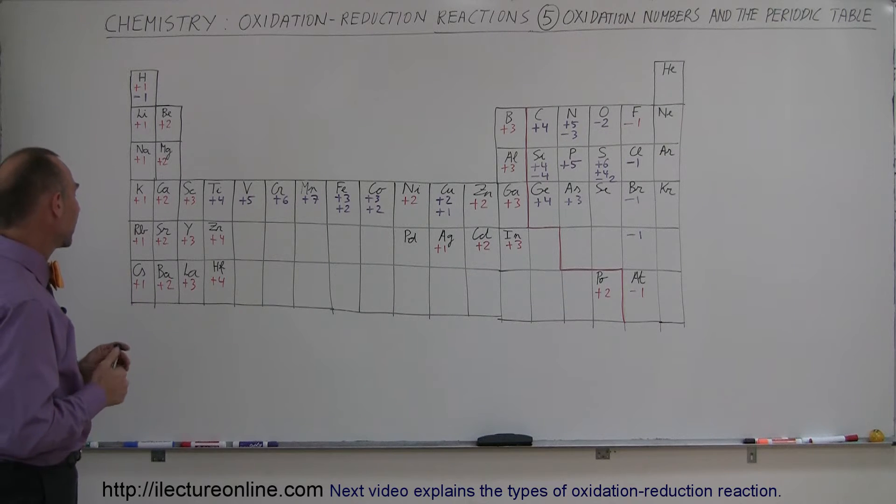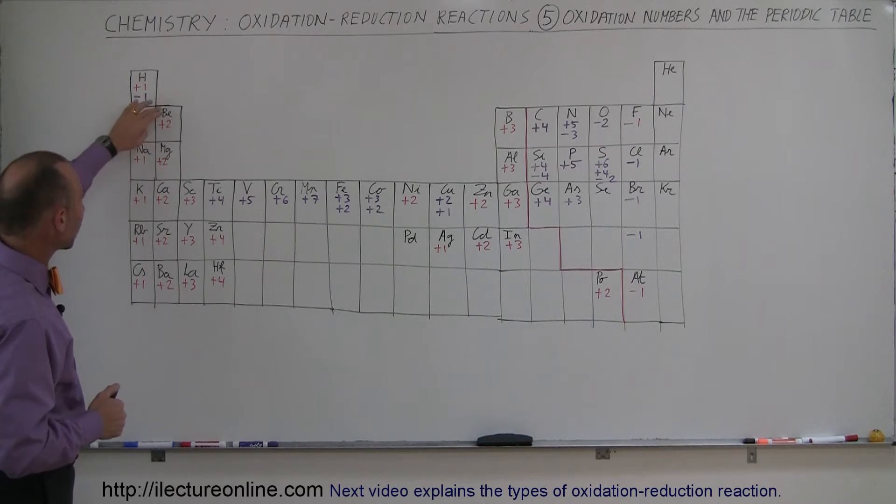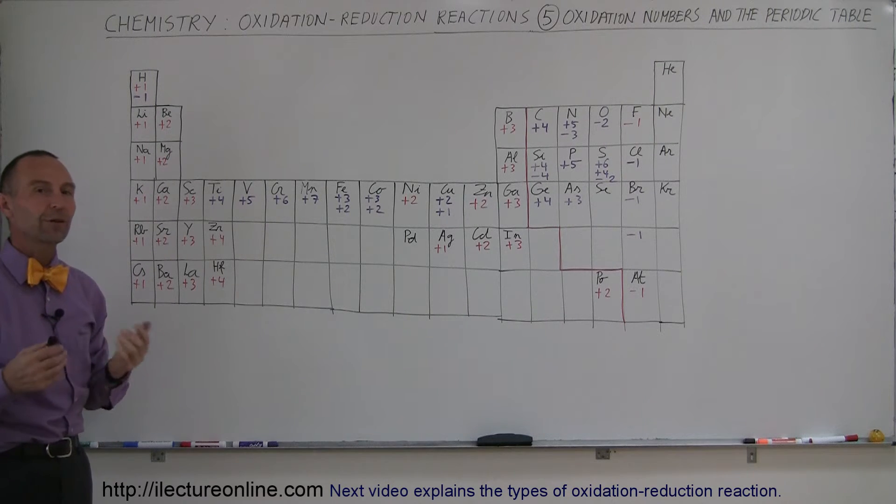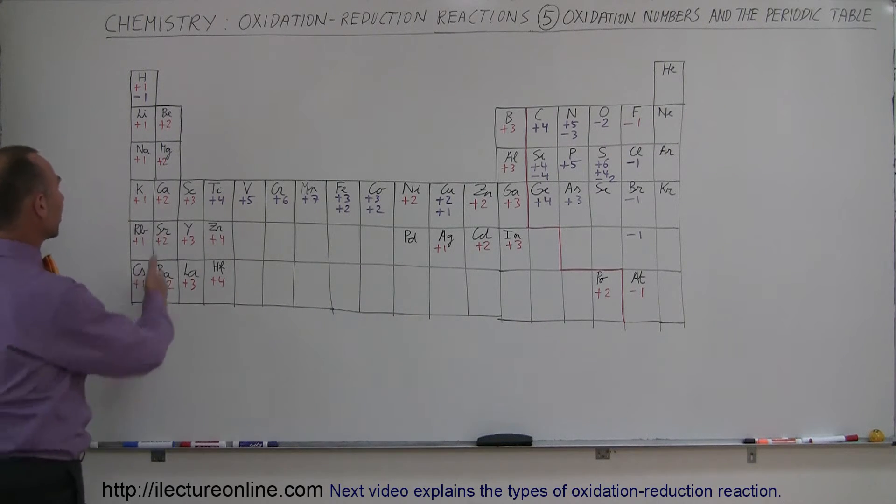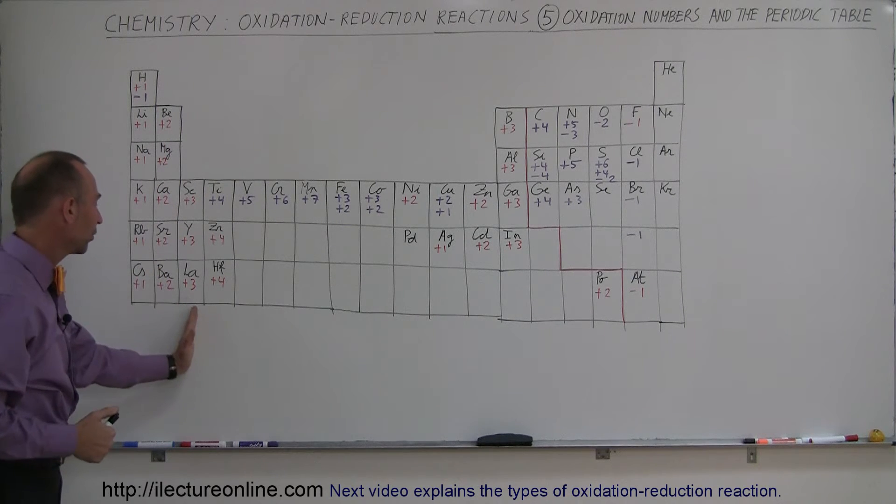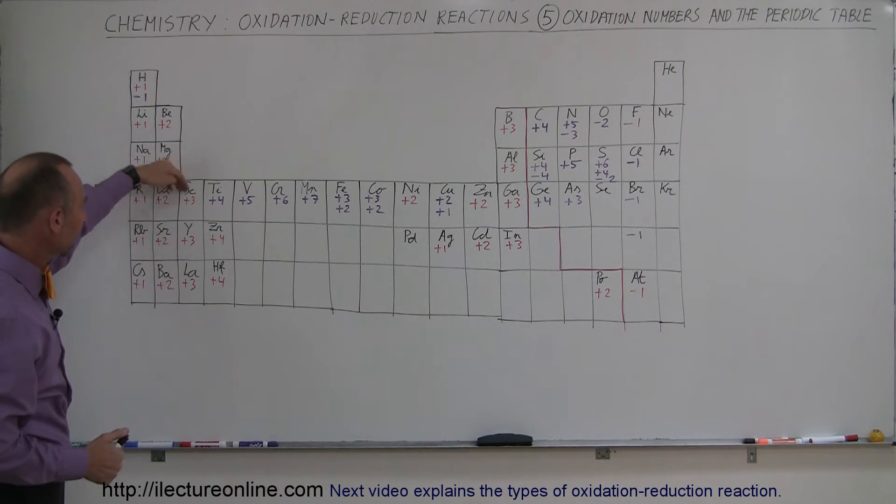In the alkaline earth metals, we can see that the only option here is that they give two of their electrons away. So the very likely oxidation state for these elements is plus two. And notice if we go then to the third column here, we can see that the only oxidation state that these can have is plus three.